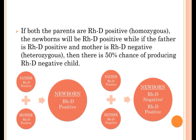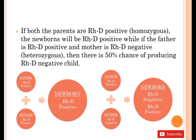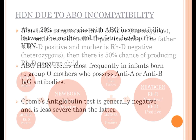If both parents are RHD positive, that is homozygous, the newborns will be RHD positive. While if the father is RHD positive and the mother is RHD negative, that is heterozygous, then there is a 50% chance of producing an RHD negative child.